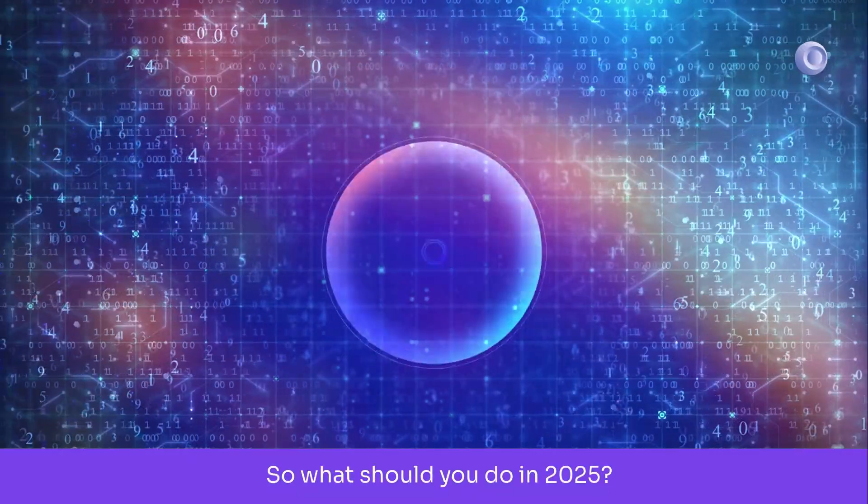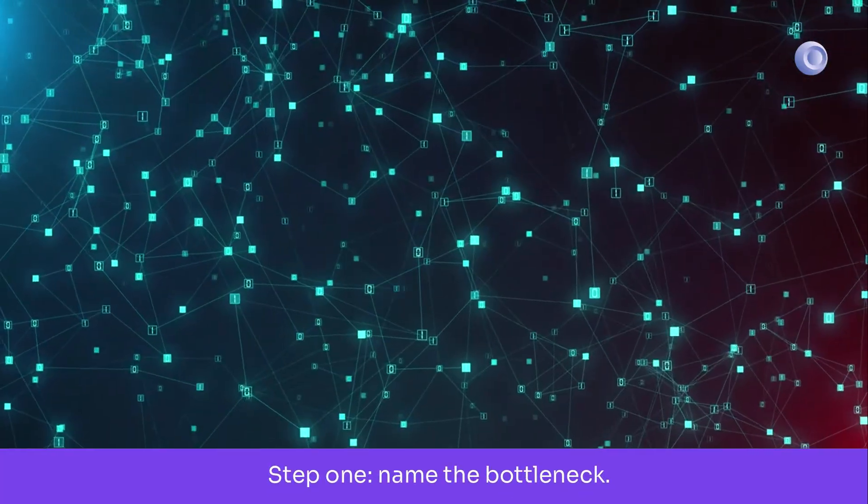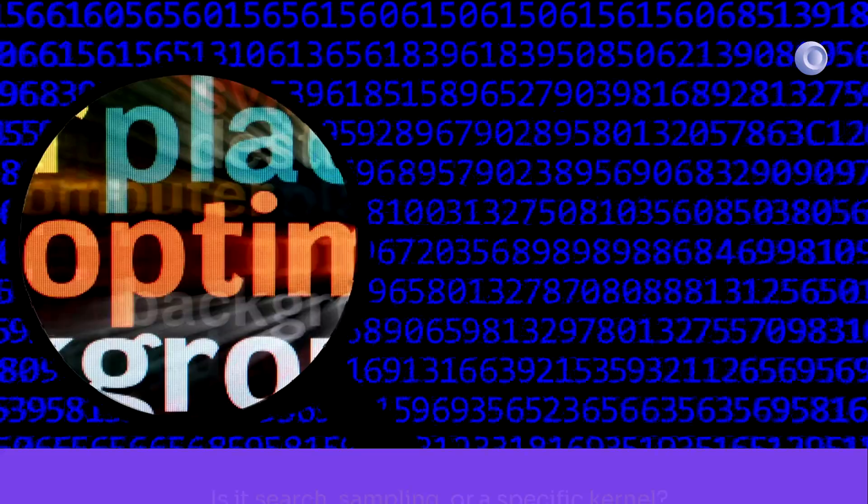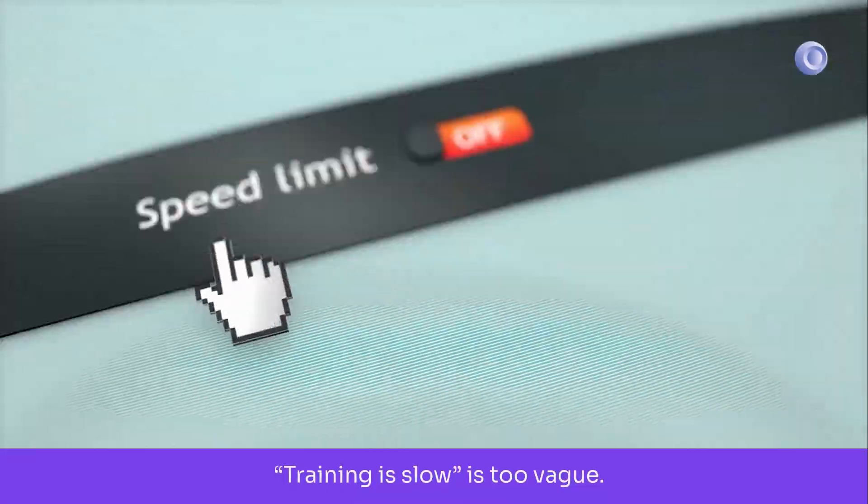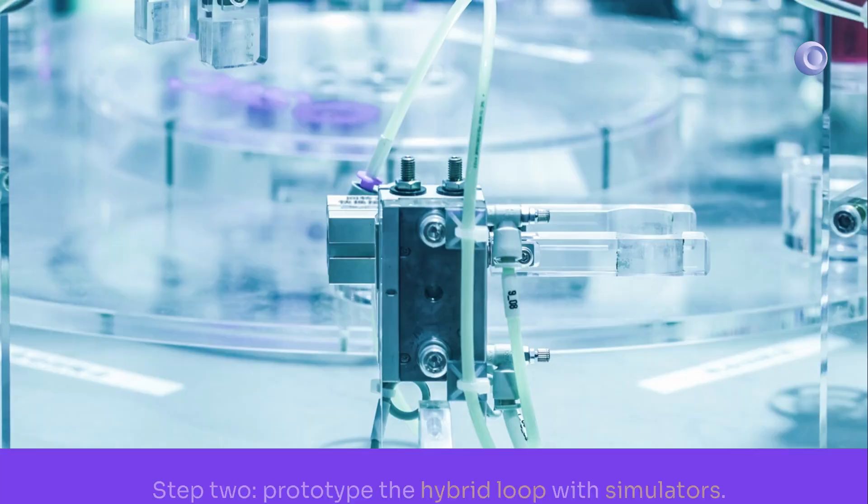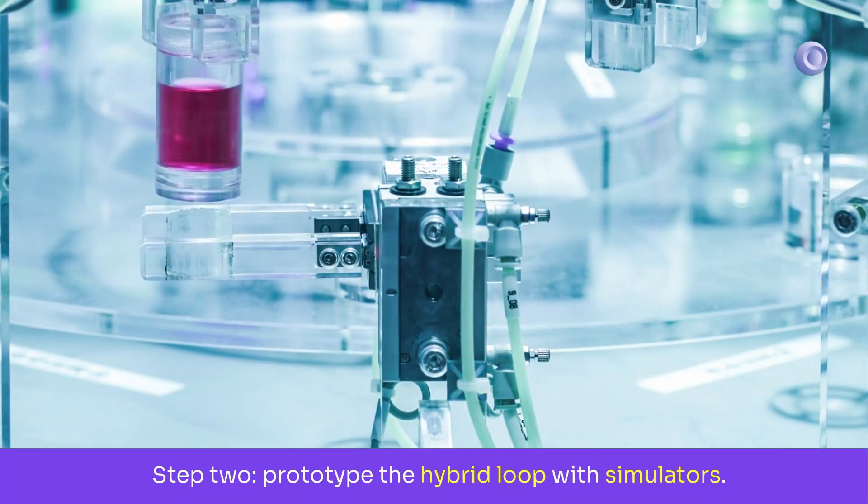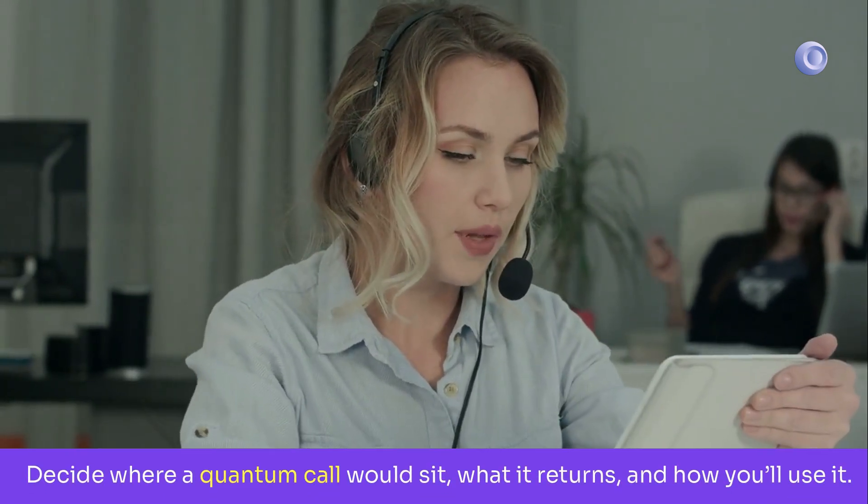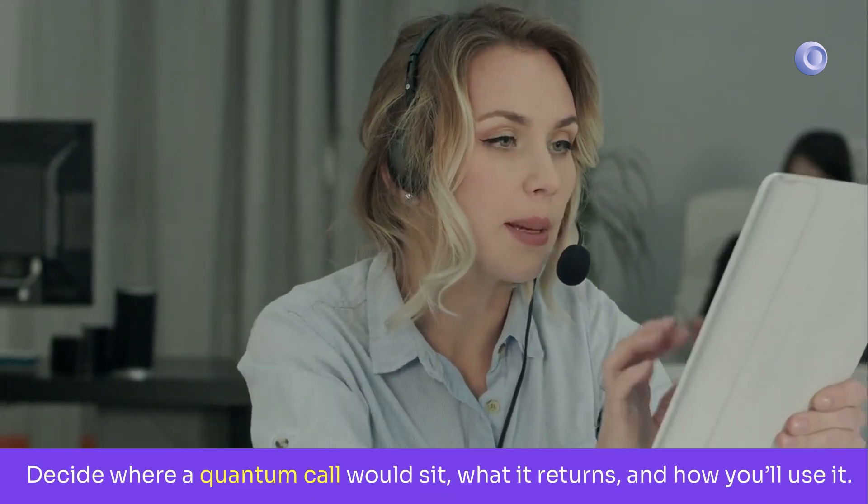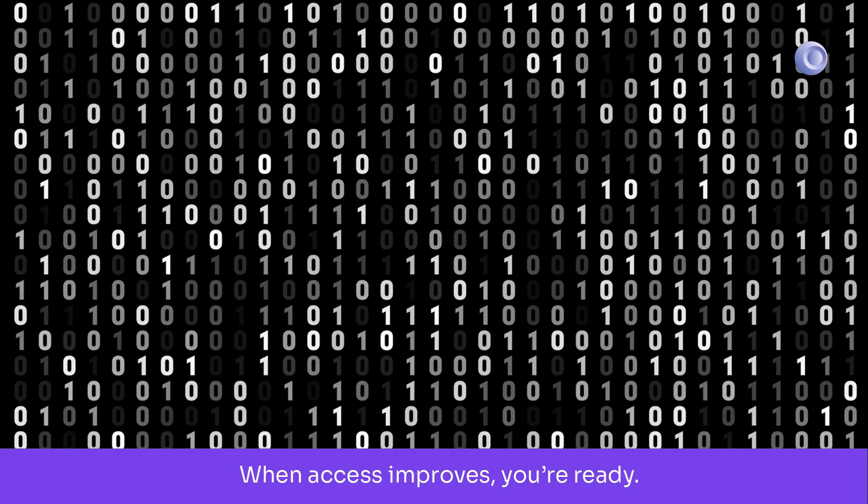So what should you do in 2025? Step 1. Name the bottleneck. Is it search, sampling, or a specific kernel? Training is slow is too vague. Step 2. Prototype the hybrid loop with simulators. Decide where a quantum call would sit, what it returns, and how you'll use it. When access improves, you're ready.